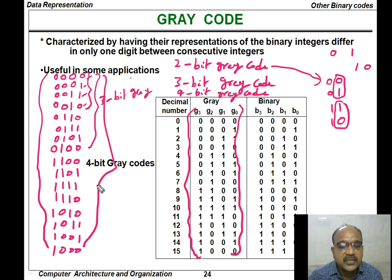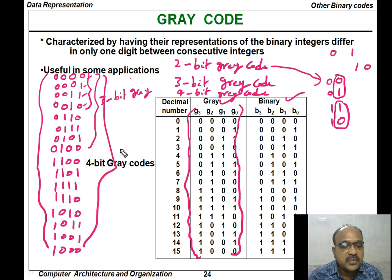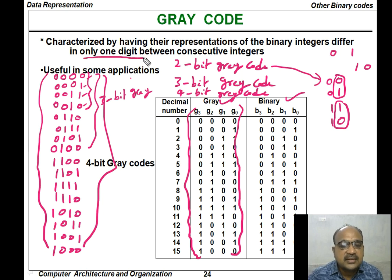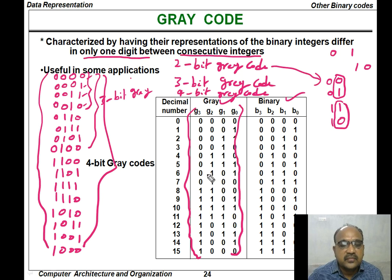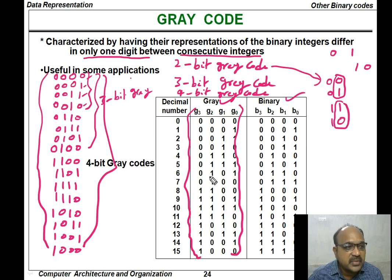Like this we generate the Gray code for 4 bits. This is the binary code and this is the Gray code. In some applications the Gray code is used wherever there is a difference of only one digit between consecutive integers. You can observe that in the Gray code, for any two consecutive numbers, there is only one bit change. These are the other binary codes we will be using in computer organization. Hope you understand the concept. That is all for now.